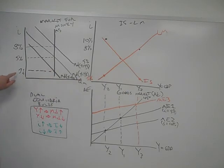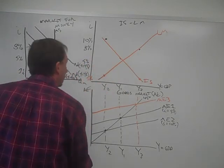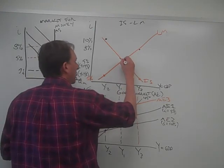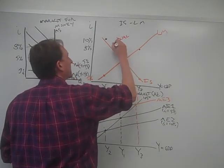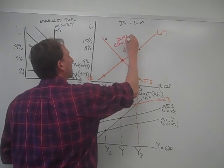And then a couple points in the market for money where money demand, given a couple different incomes, gives us equilibrium interest rates. And then we plot all that information over here, and then we find this particular point.